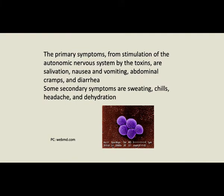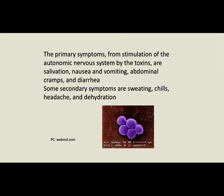If such food is consumed, symptoms occur within 2 to 4 hours, with a range of 30 minutes to 8 hours. This time range is related to the potency of the enterotoxin, the amount of toxin ingested, and the basic resistance and immunity of the person. The primary symptoms from stimulation of the autonomic nervous system by the toxins are salivation, nausea, vomiting, abdominal cramps and diarrhea. Secondary symptoms include sweating, chills, headache and dehydration.